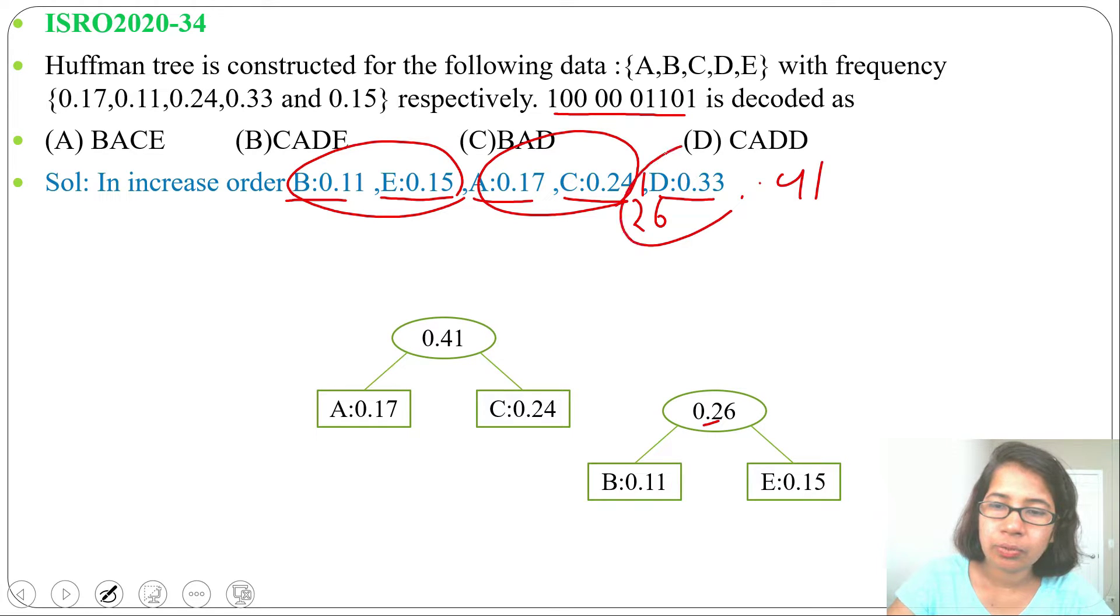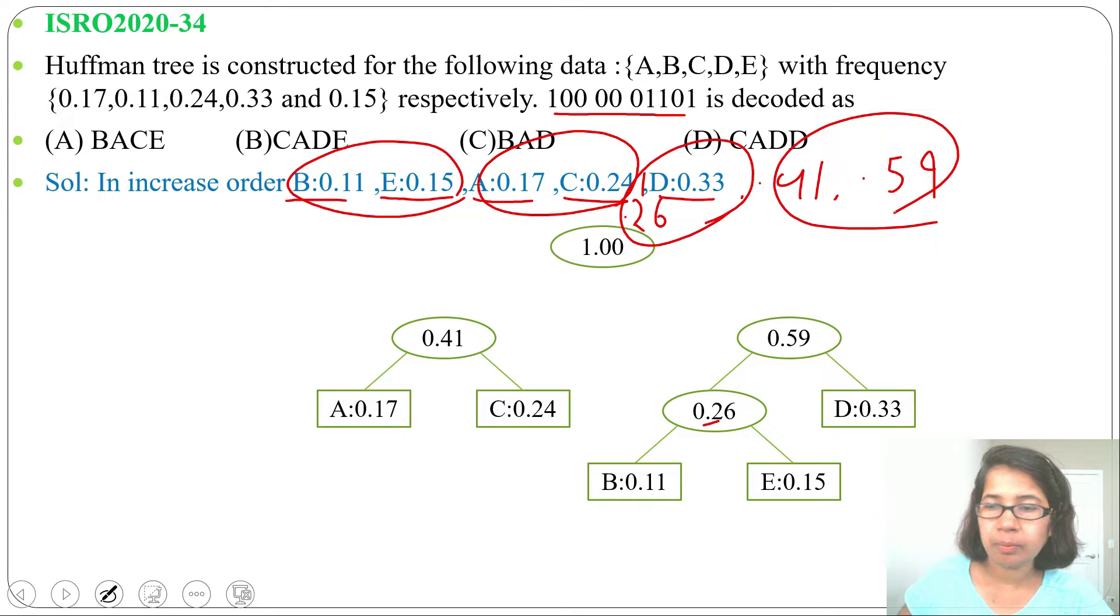Next we will add these two 0.26 plus 0.33, it will be 0.59, so we will insert 0.59 in the queue. Next we will add 0.41 and 0.59, it will be 1.0. Now tree is constructed.